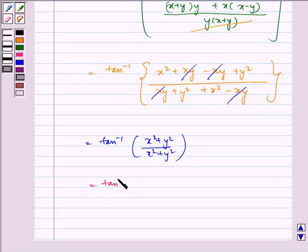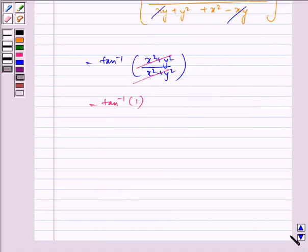It is equal to tan inverse of 1 because this gets cancelled with this, which is equal to pi by 4.